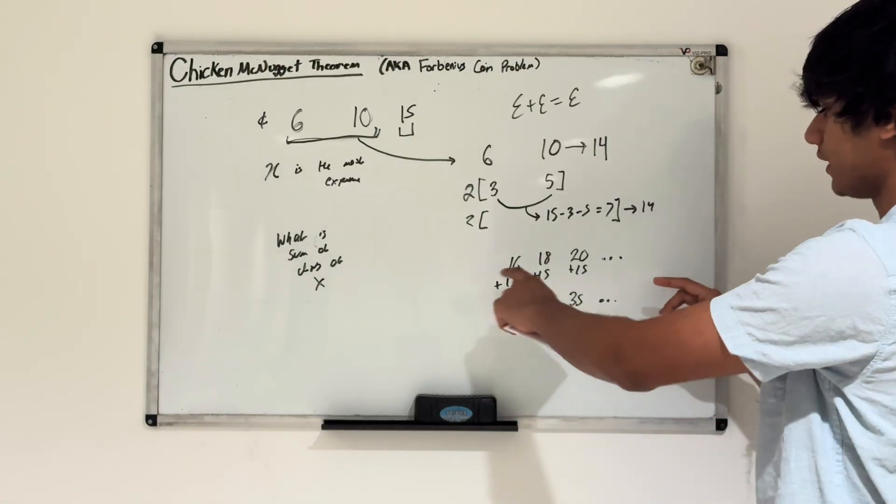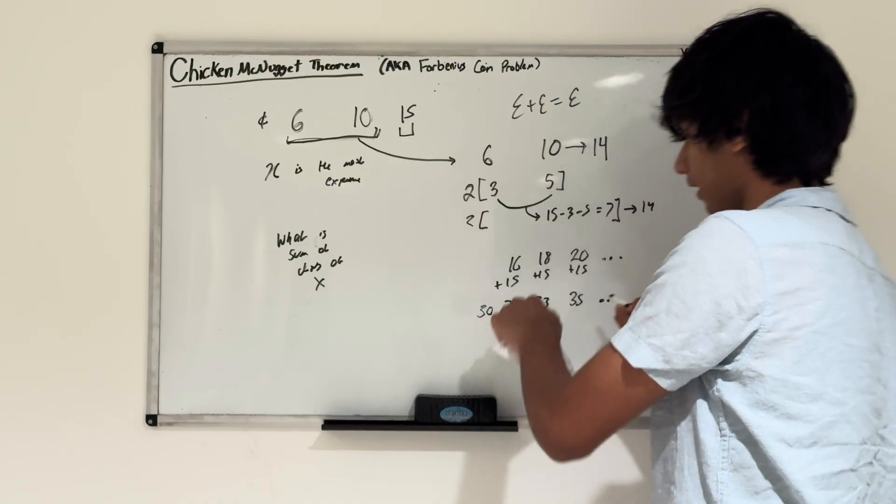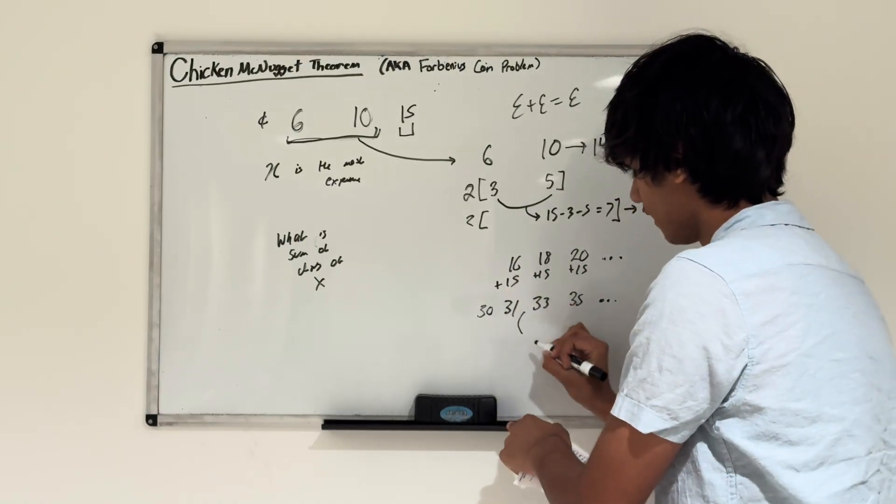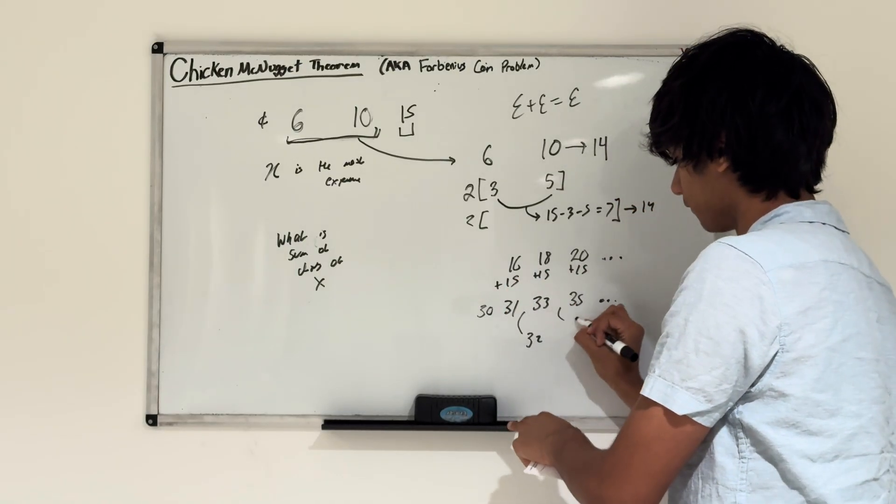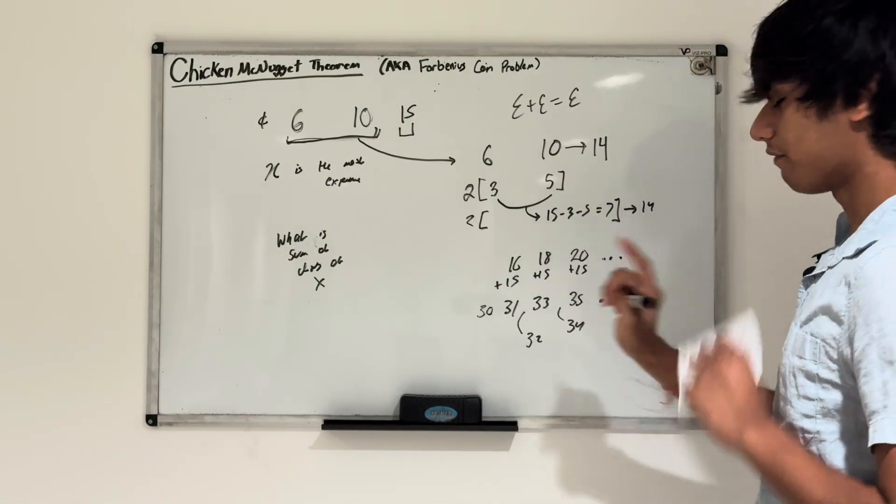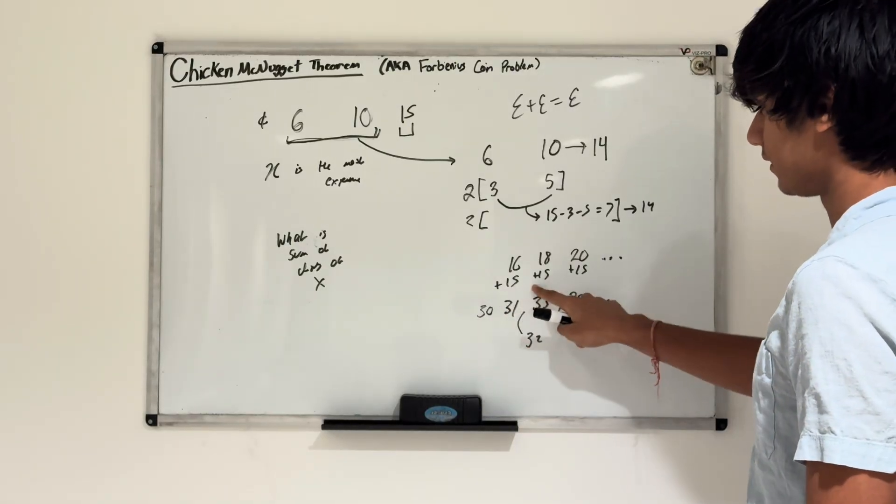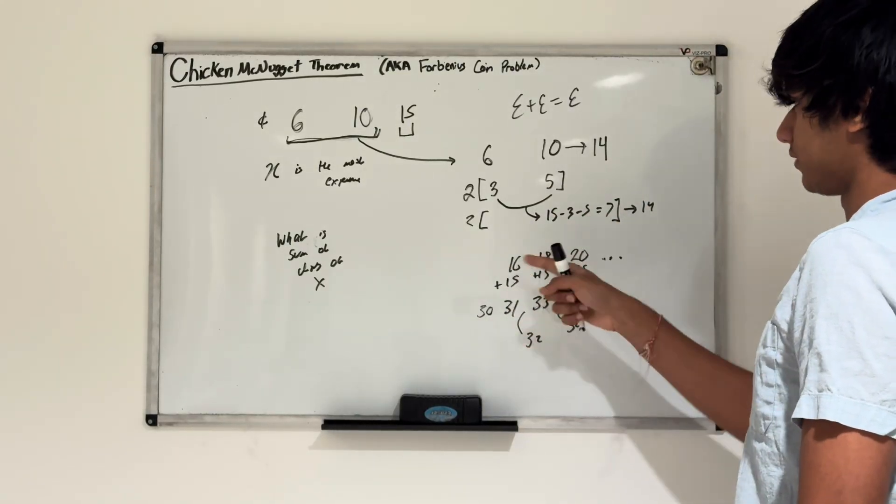Because we're making every even number beyond 16, we fill in the gaps. We can make 30, 32, and 34. Now we can make every single number, even and odd, after 30, because you're adding 15 to the smallest number, 16.